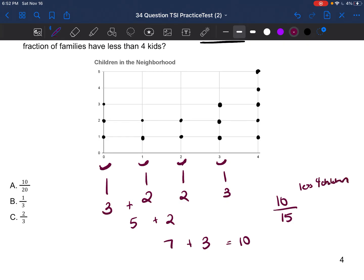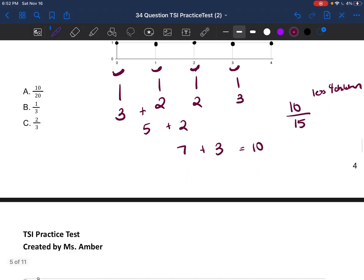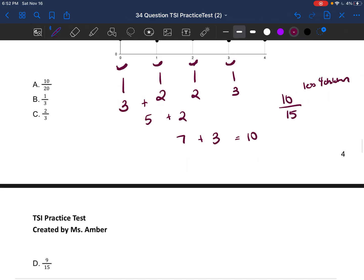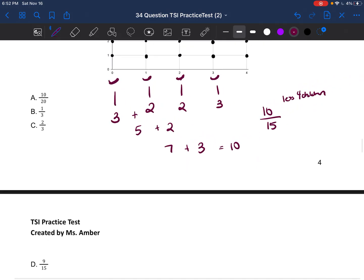So 10 out of the 15 families have less than 4 children in their family. But again, oftentimes when you have fractions, especially on a test, they want you to reduce. So let's go ahead and reduce this. You reduce this fraction by dividing the top and the bottom number by the largest number that goes into both. So the largest number that goes into 10 and 15 is 5. So 10 divided by 5 is 2, and 15 divided by 5 is 3. So 2 out of the 3 families would have less than 4 children. So the answer would be C.